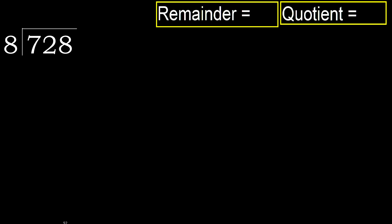728 divided by 8. 7 is less, therefore next 72. 72 is not less, therefore with 72, 8 multiplied by which number is nearest to 72, but not greater?